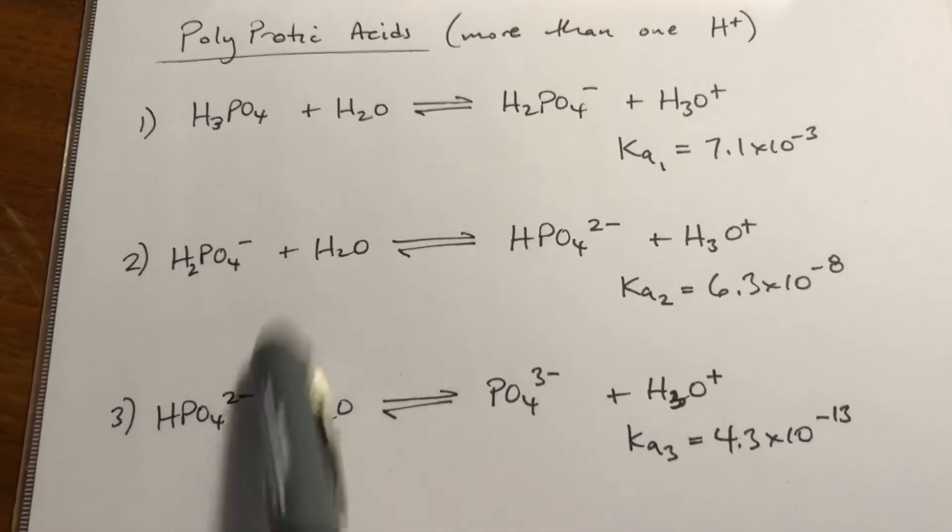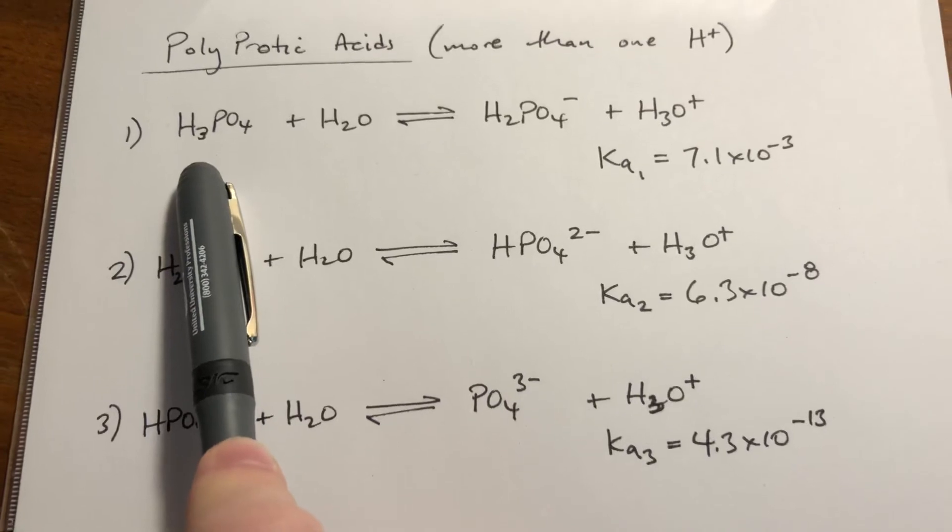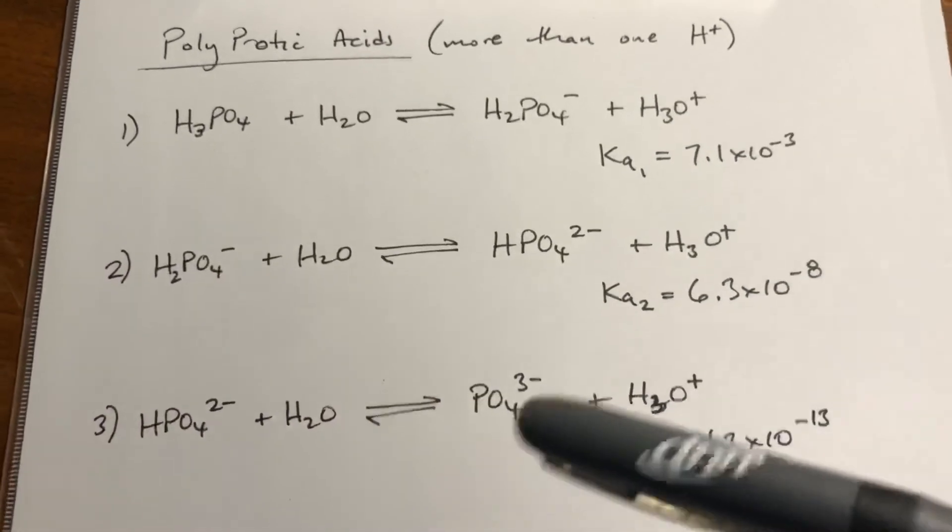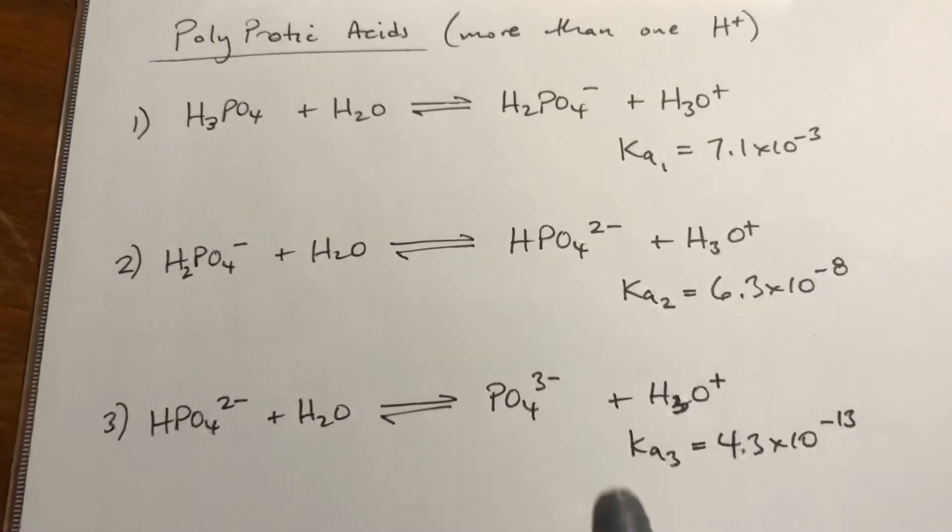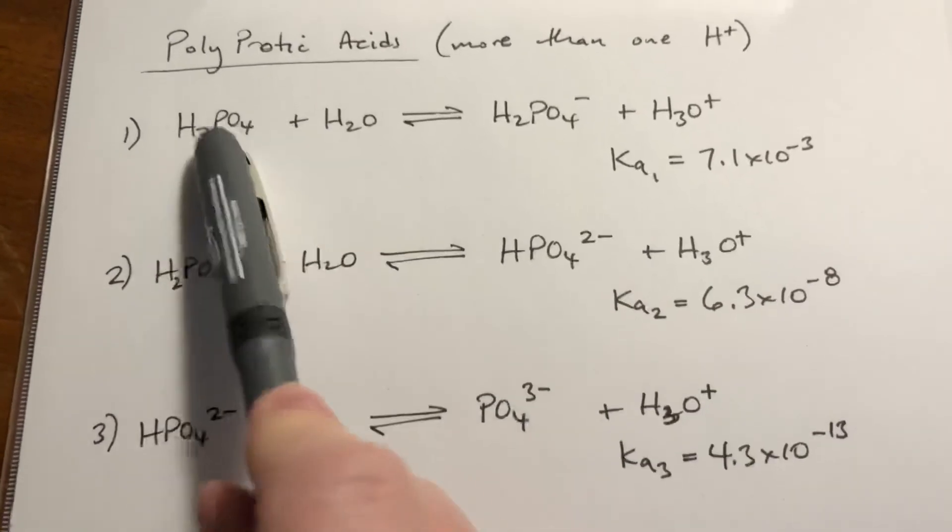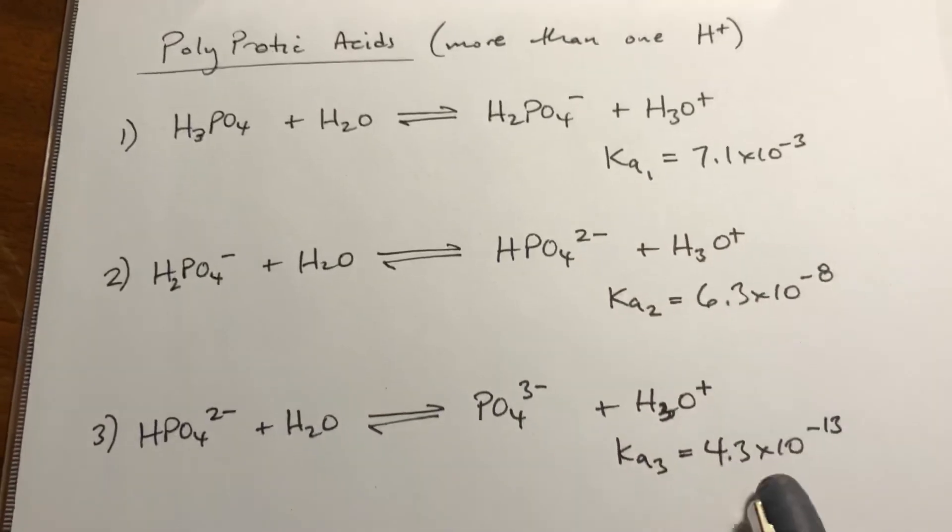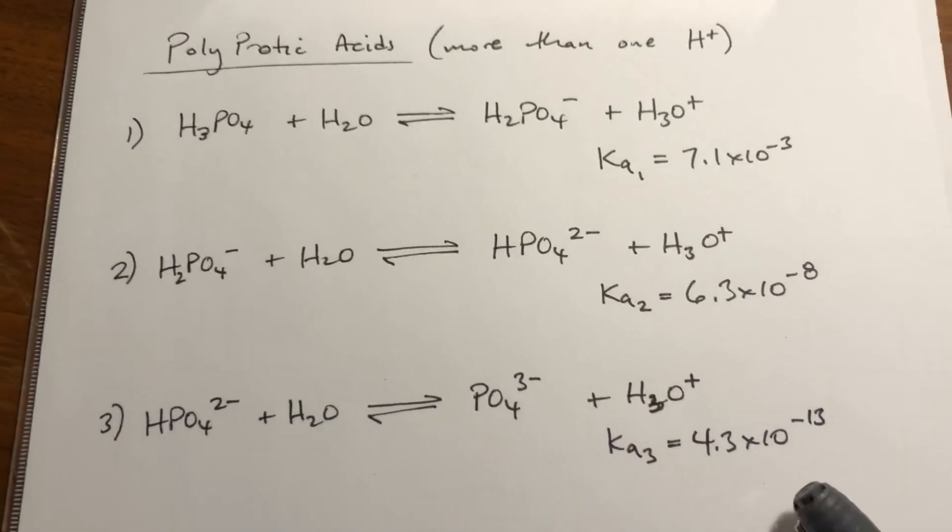So in other words, if you take H3PO4 and you add NaOH to it, or KOH, a strong base, what will happen is we don't even care what the Ka values are. Essentially, you'll get all three protons off. So these Ka values matter if you're just throwing it in water.